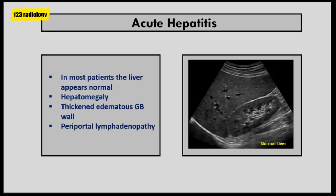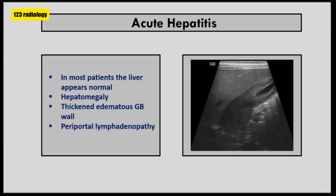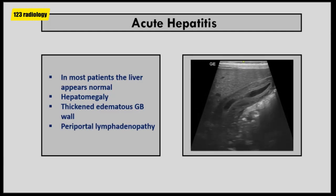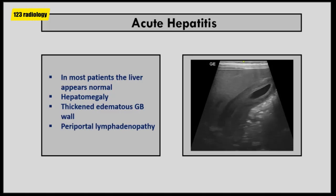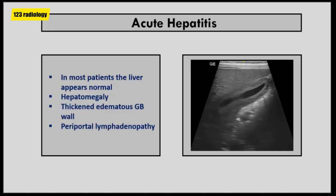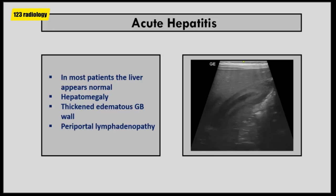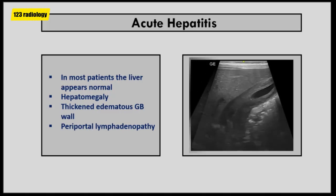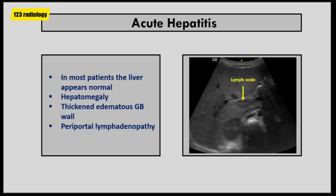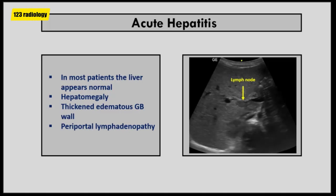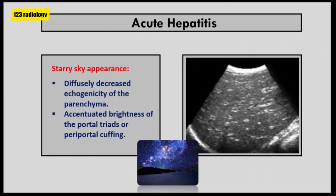Hepatomegaly is seen in many cases. Thickening of the gallbladder wall occurs in up to 80% of acute hepatitis, particularly in viral hepatitis, as you can see in this case. It occurs due to hypoalbuminemia that generates gallbladder wall edema. Periportal lymphadenopathy can be seen in patients with acute hepatitis, particularly in viral hepatitis. The liver parenchyma may show diffuse hypoechogenicity, with accentuated brightness of the portal triads, or periportal cuffing.